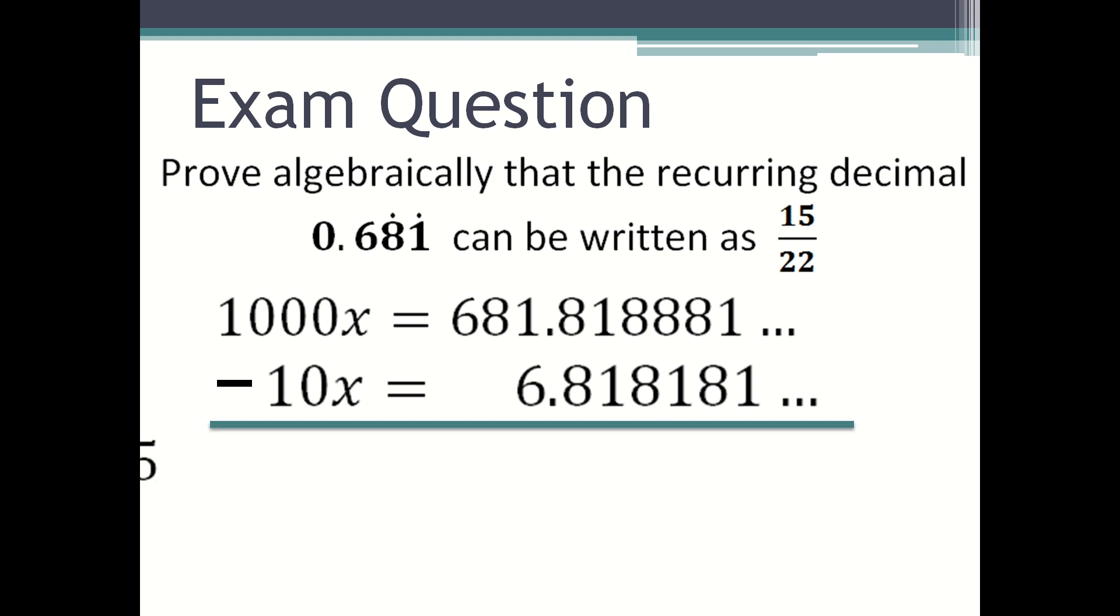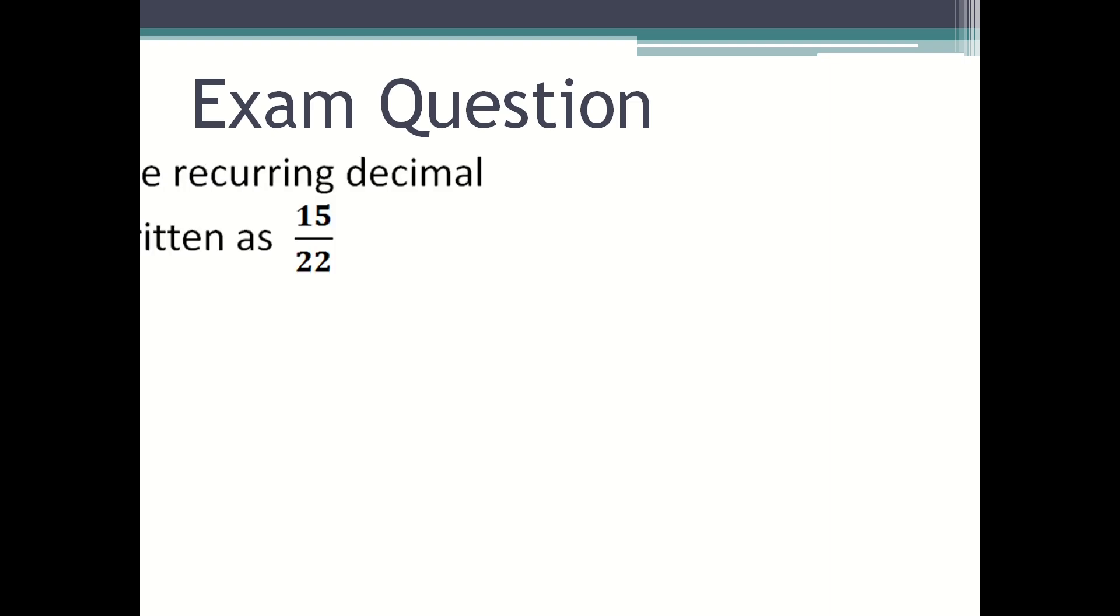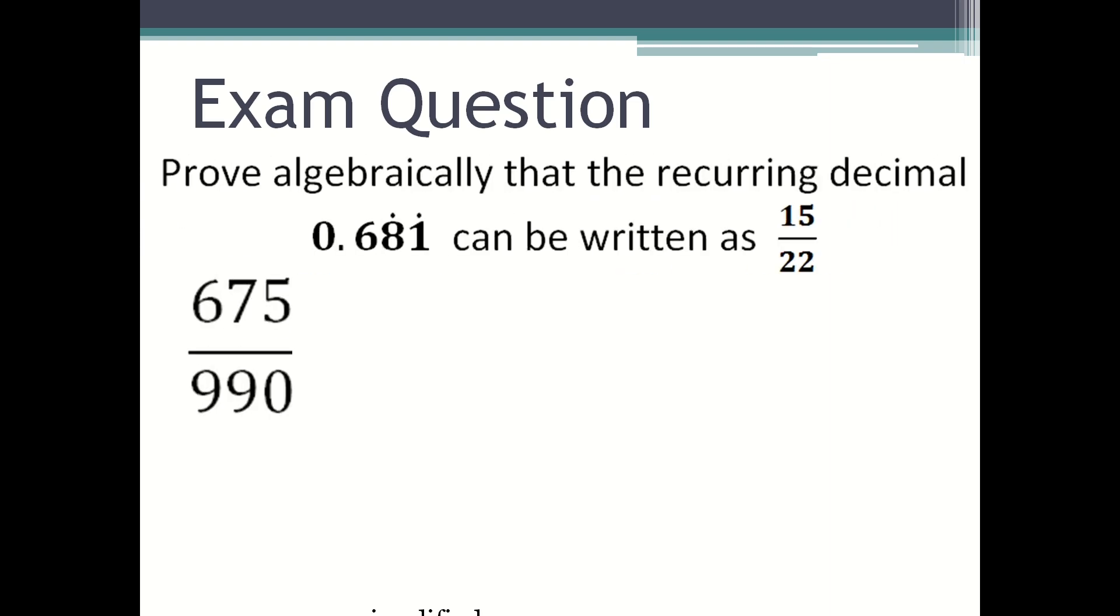You then do the subtraction and you will get 990x is equal to 675. You divide 675 by 990, and in here you'll be able to simplify the fraction to 15 over 22. Therefore 0.681 recurring is equal to 15 over 22.